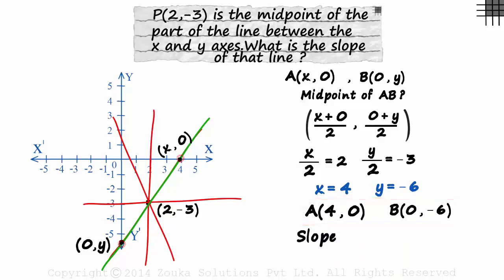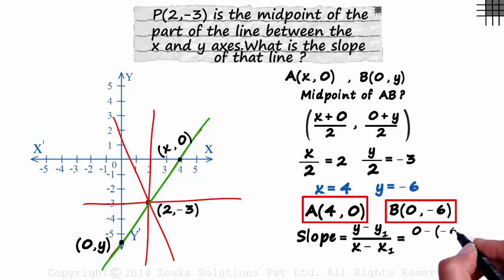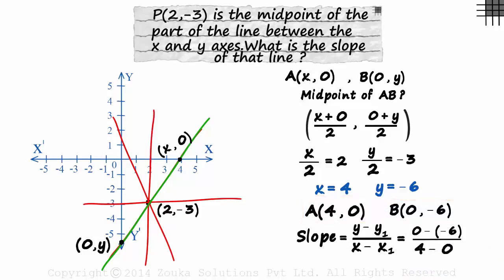The slope is defined as y minus y1 over x minus x1. Using points A and B, we get 0 minus minus 6 as the numerator, and 4 minus 0 as the denominator. The slope will equal 3 over 2.